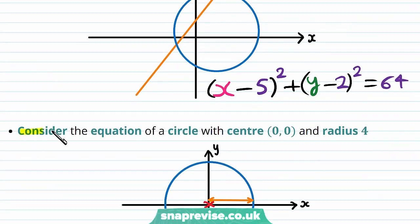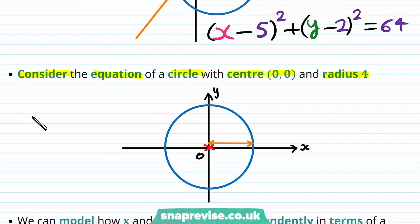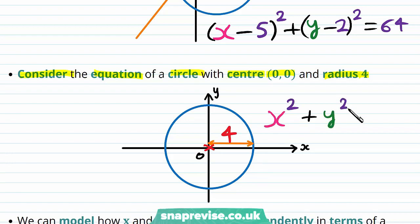Consider the equation of a circle with centre at (0, 0) and radius 4. The radius is 4 and because it is centred at the origin it's going to have an equation x squared plus y squared is equal to 16.